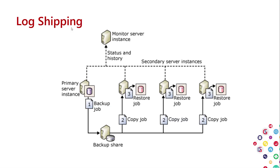Log shipping is the next step in the evolution. It keeps two or more sites running in parallel, very close to the same point in time. From your primary server, a job backs up the database periodically — full backups and then transaction log backups, which capture all transactions since the last backup. Other jobs running on each secondary node copy those transaction log backups and apply them.